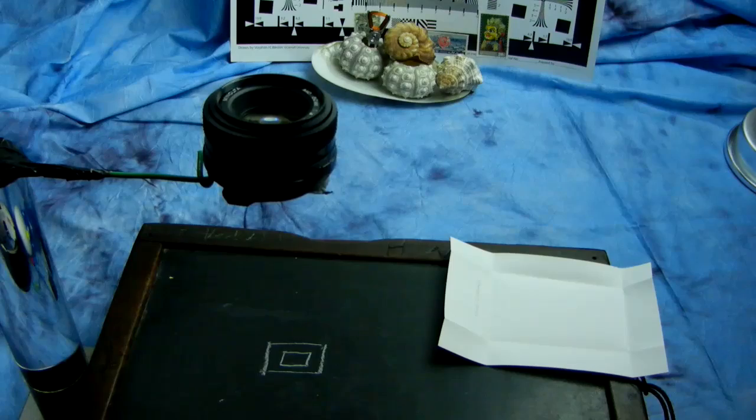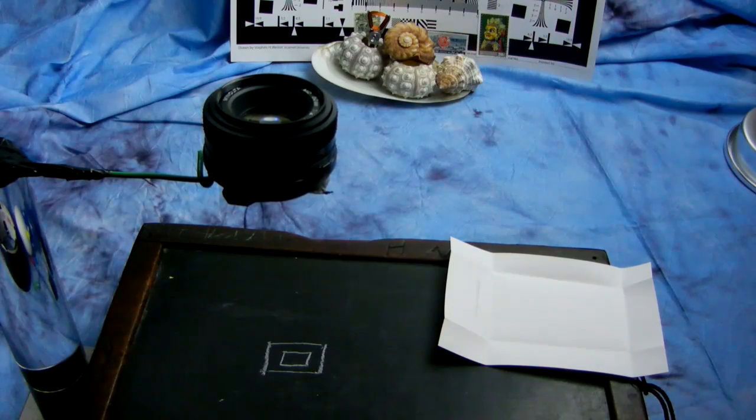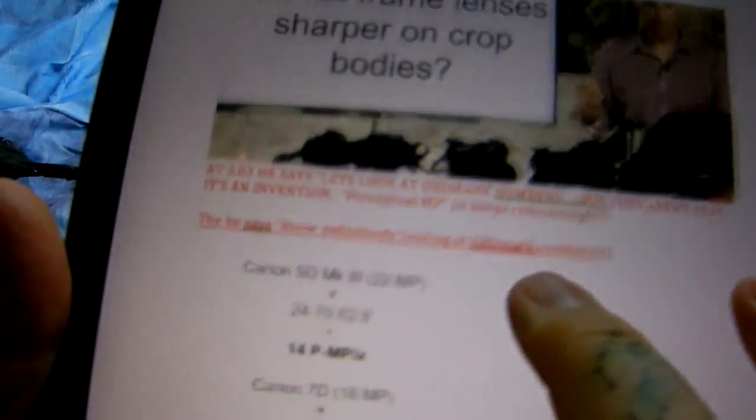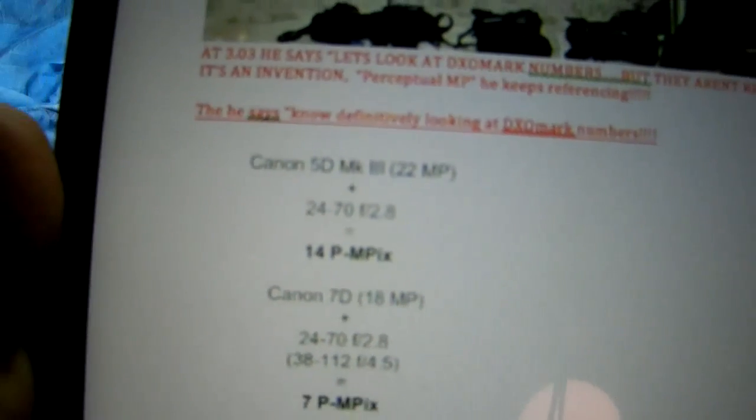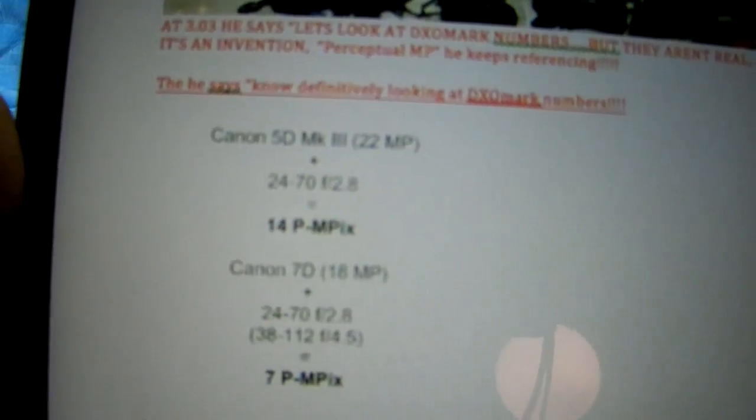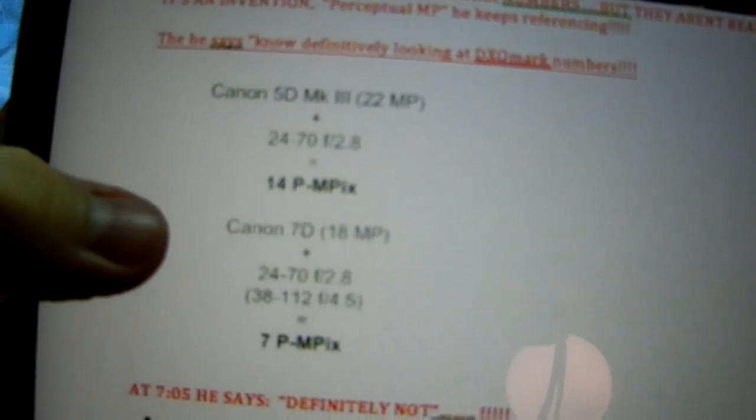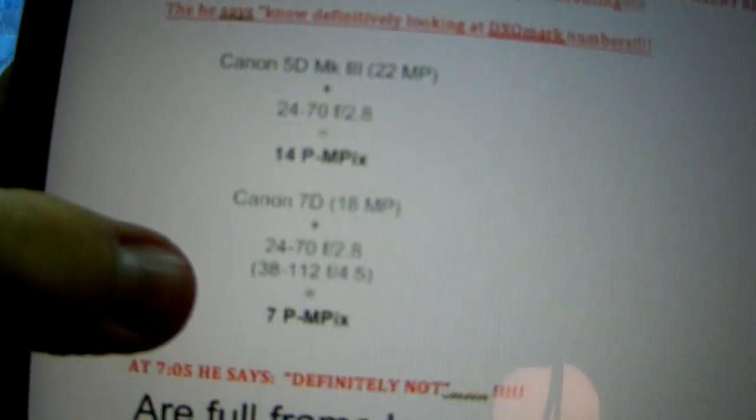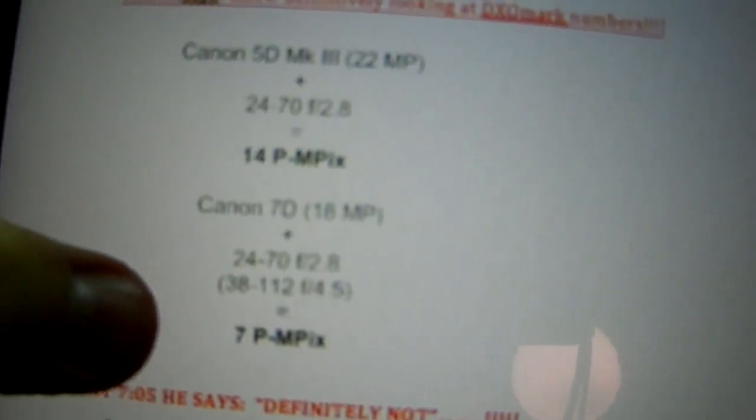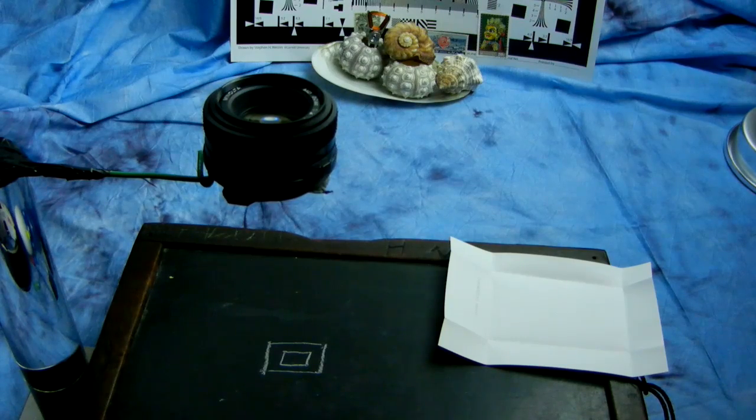Then he says, we will know definitely, we will know something definitive by looking at DXOMark numbers. Then he brings up a reference to the 5D Mark II Canon, 14 perceptual megapixels versus the Canon 7D, which is an 18 megapixel. We'll talk about the 24-70 lens on it. And it is a perceptual megapixel of 7. This is nonsense. I've got the test shots. I'm going to post them here in the links below.